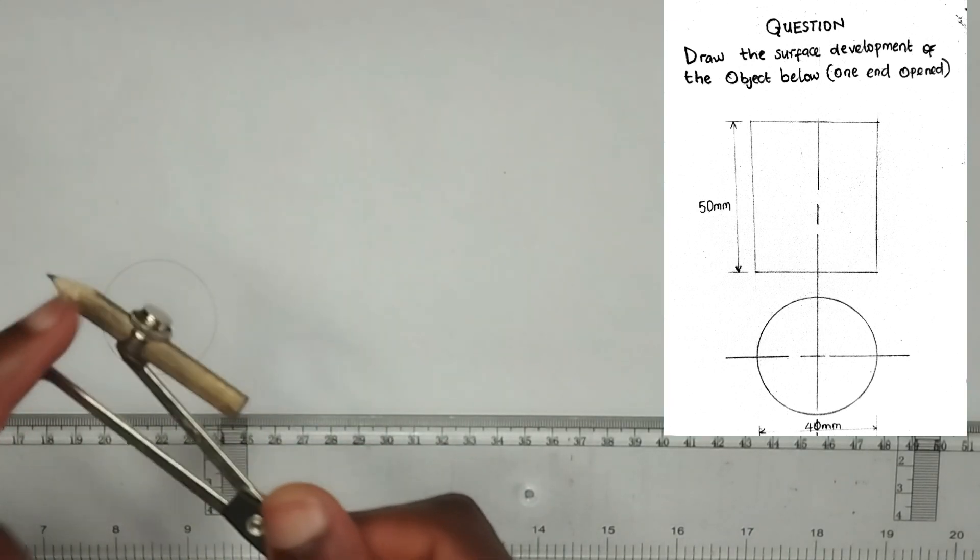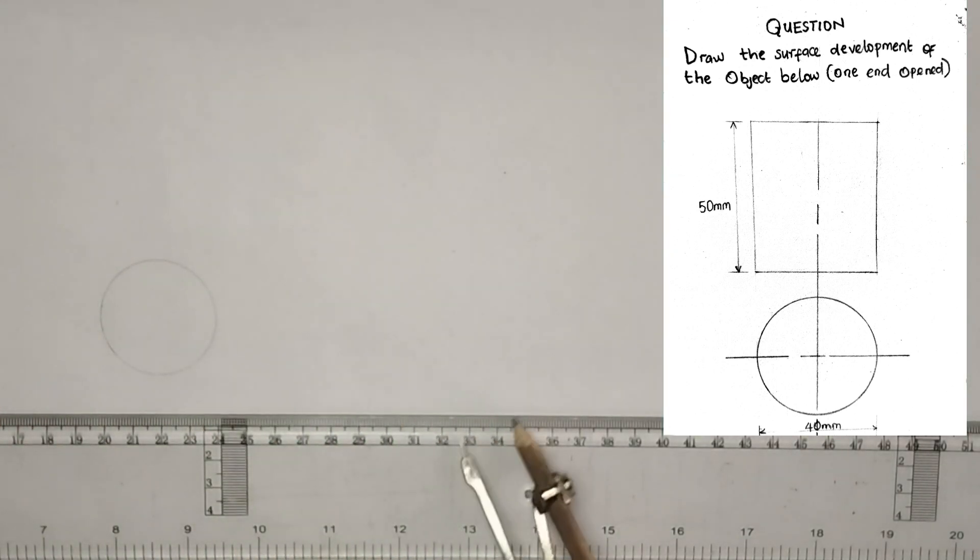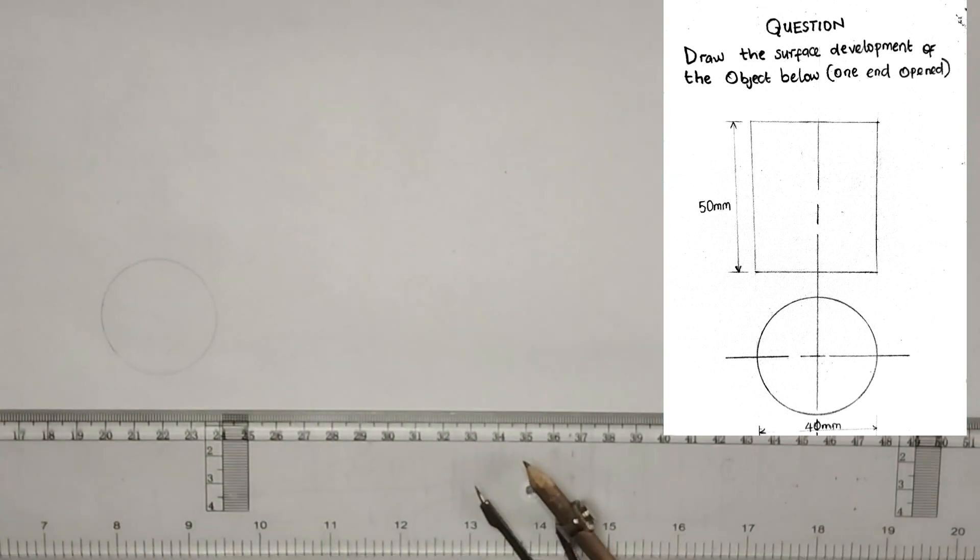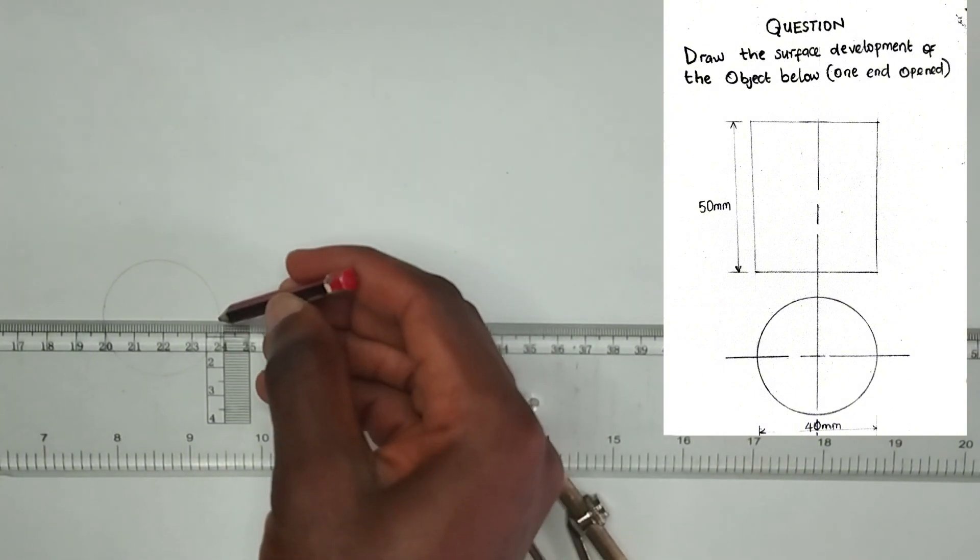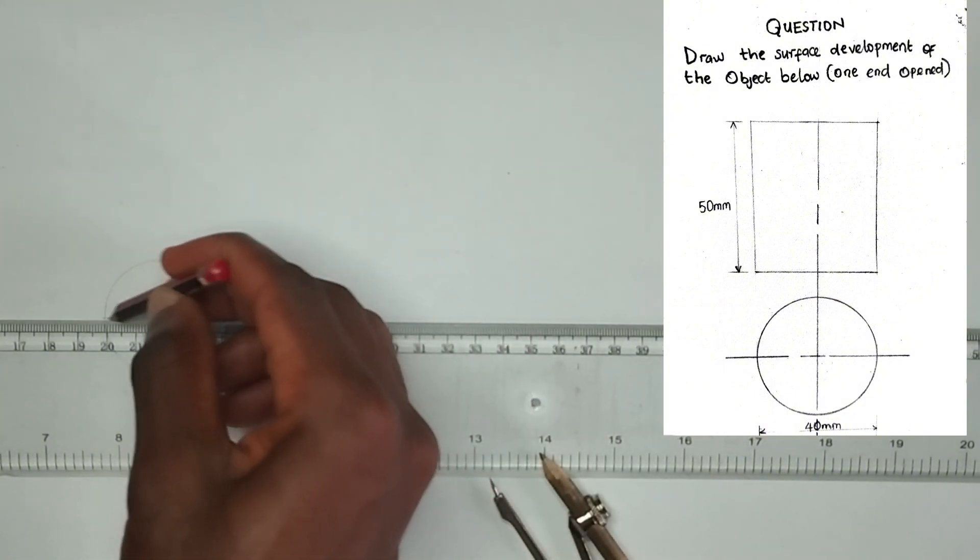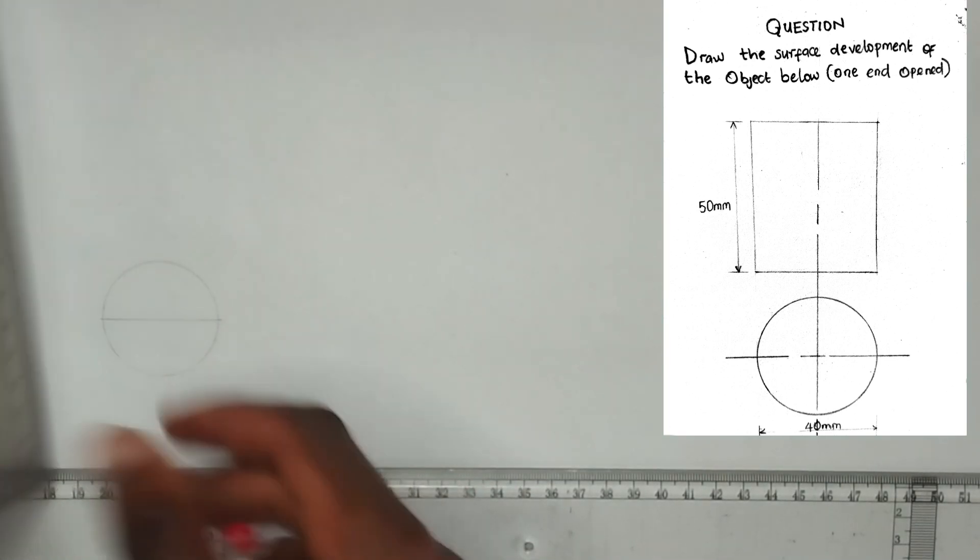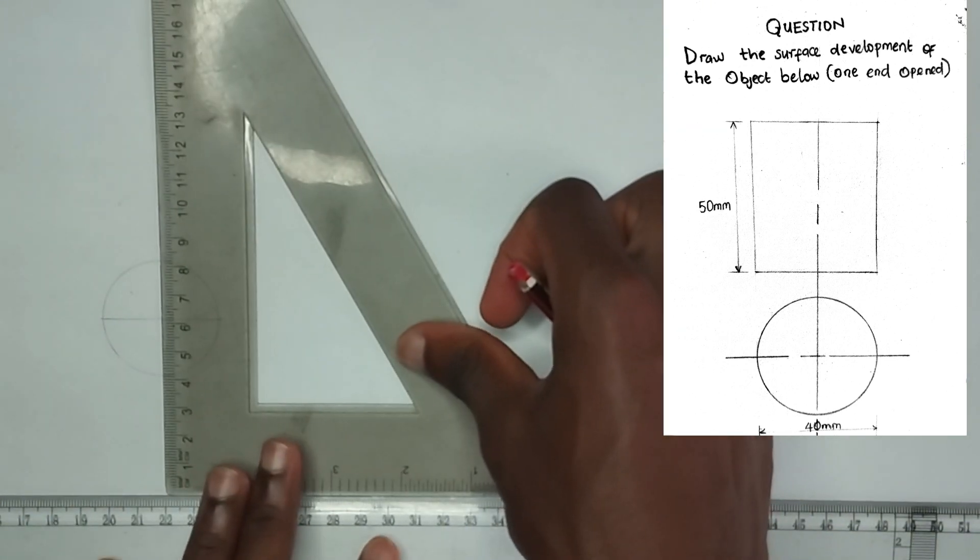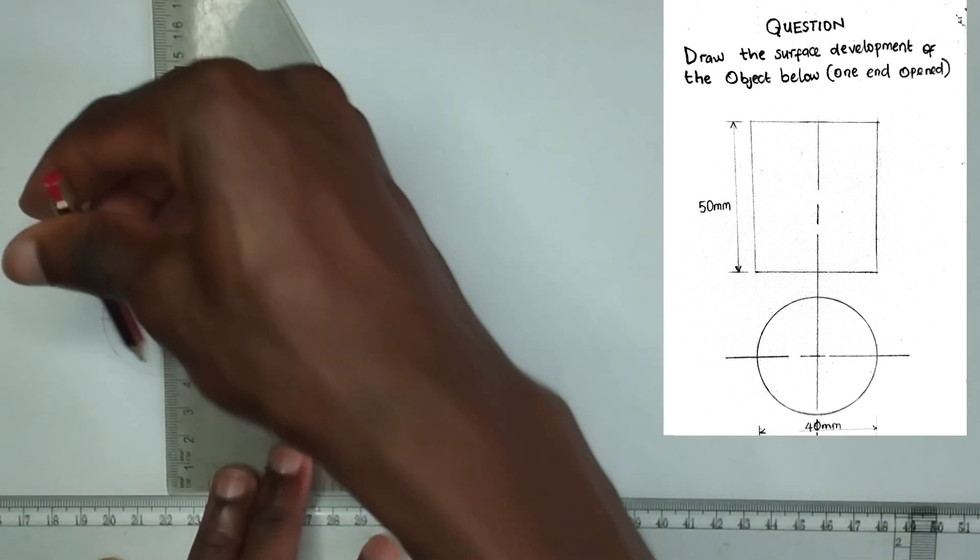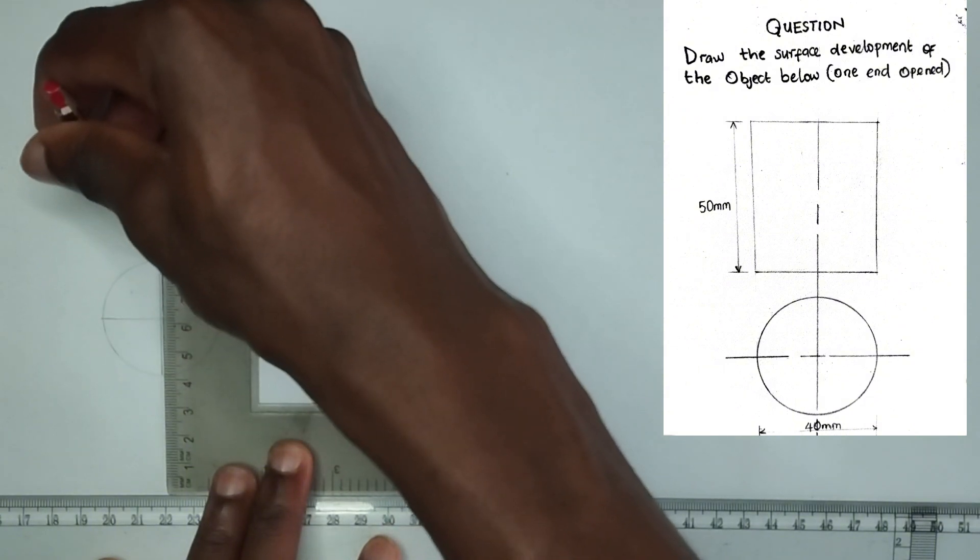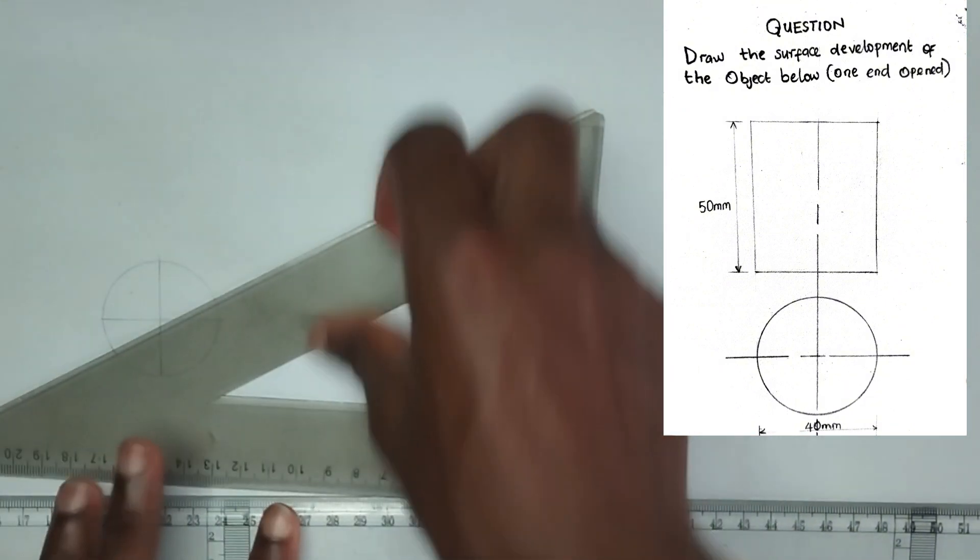So I'm going to pick 20mm on my compass, which I've done. Then we are going to divide the circle into 12 equal parts. I've actually done a video on that, I'll be dropping the link in the description below where you can watch it if you still don't know how to divide the circle into 12 equal parts. So we are going to make use of the set-square method for this video.